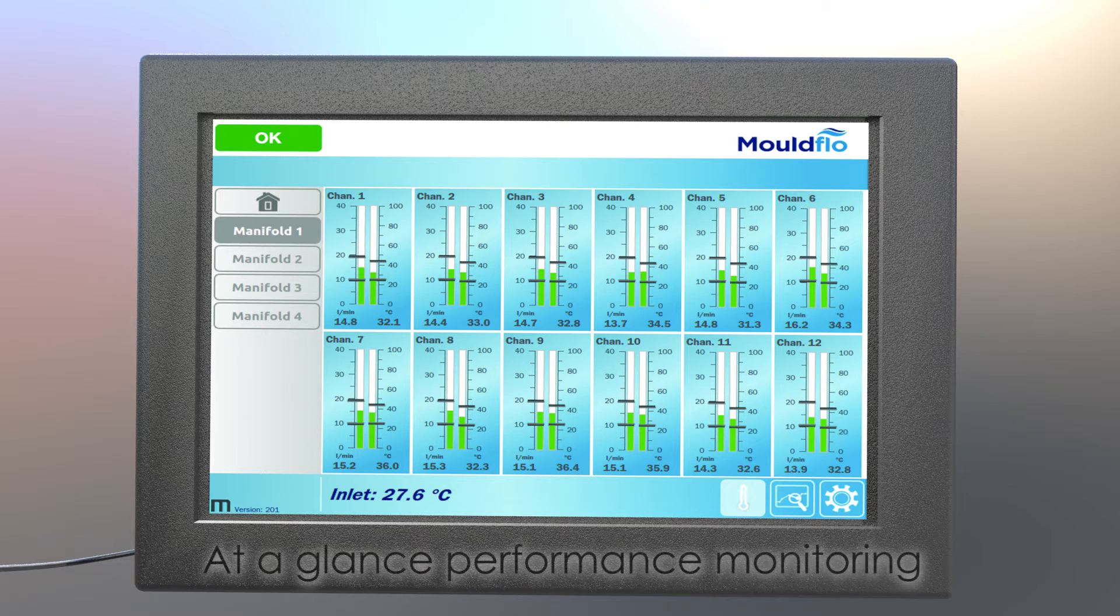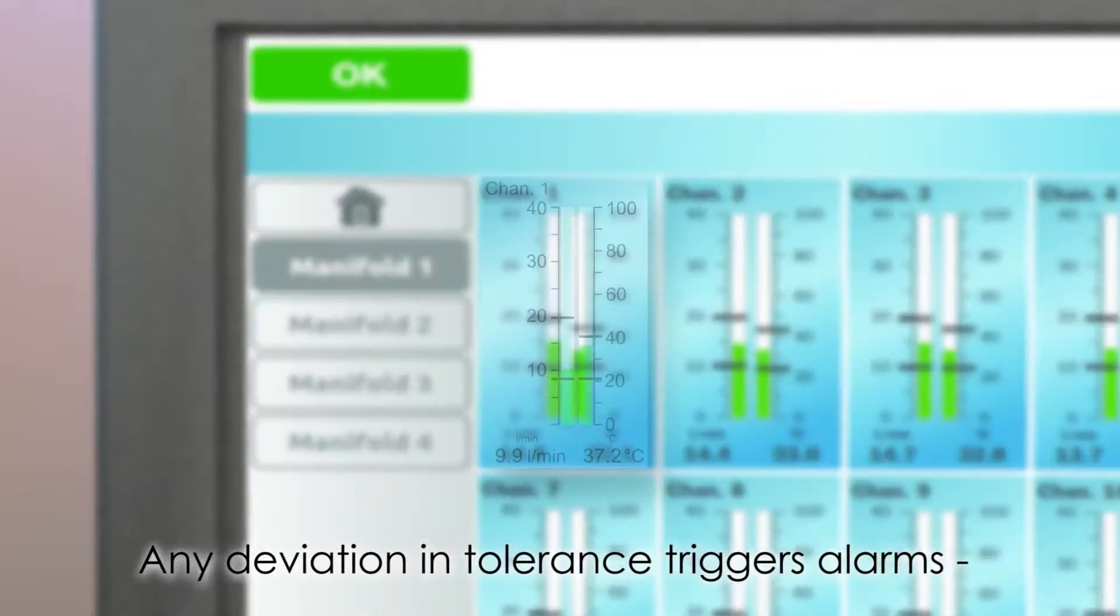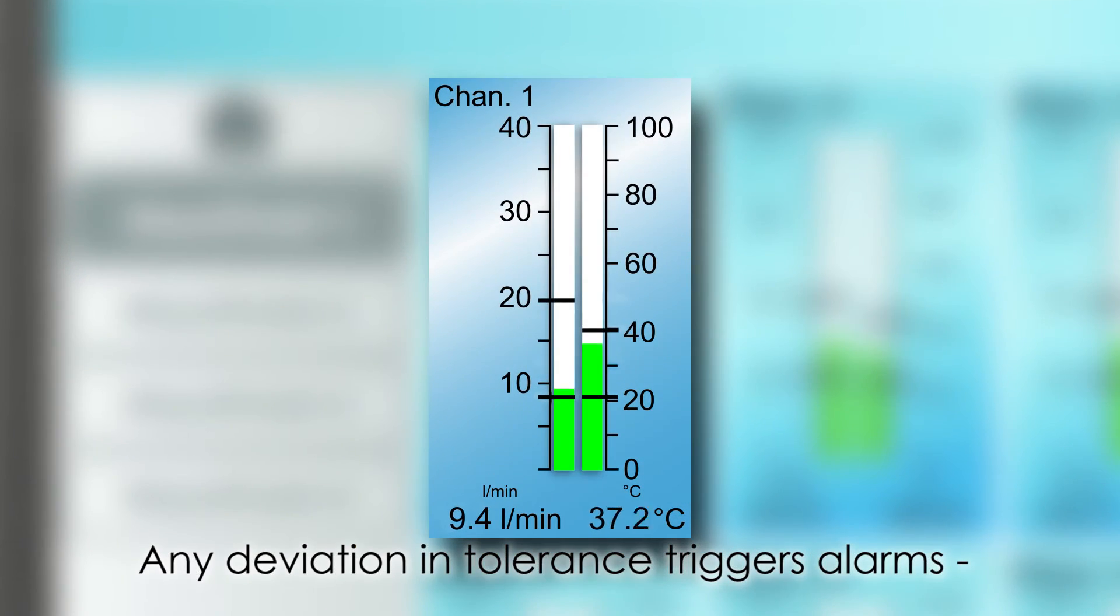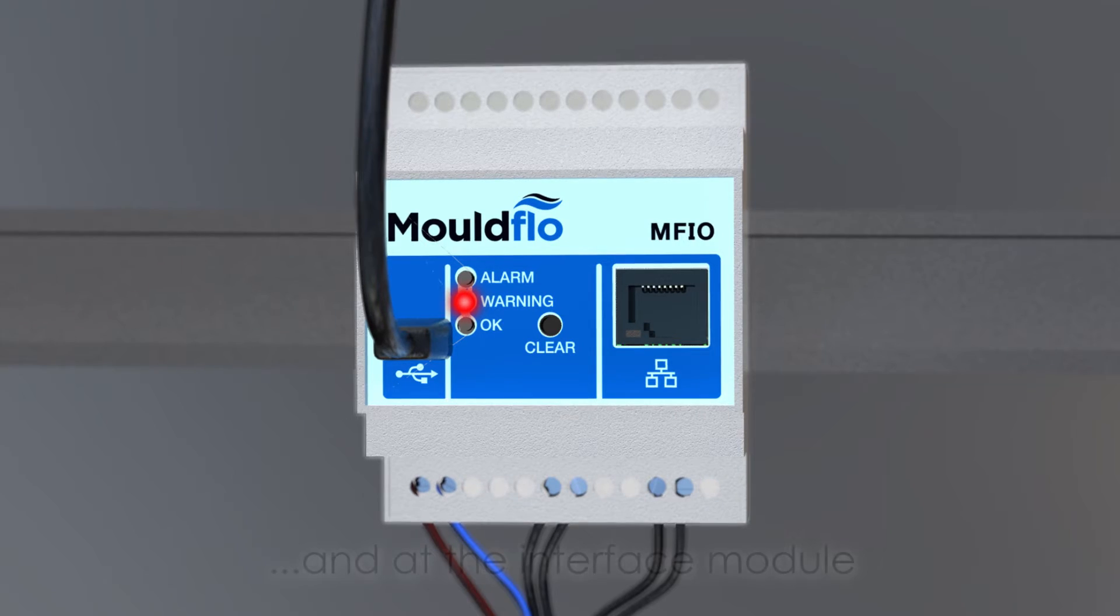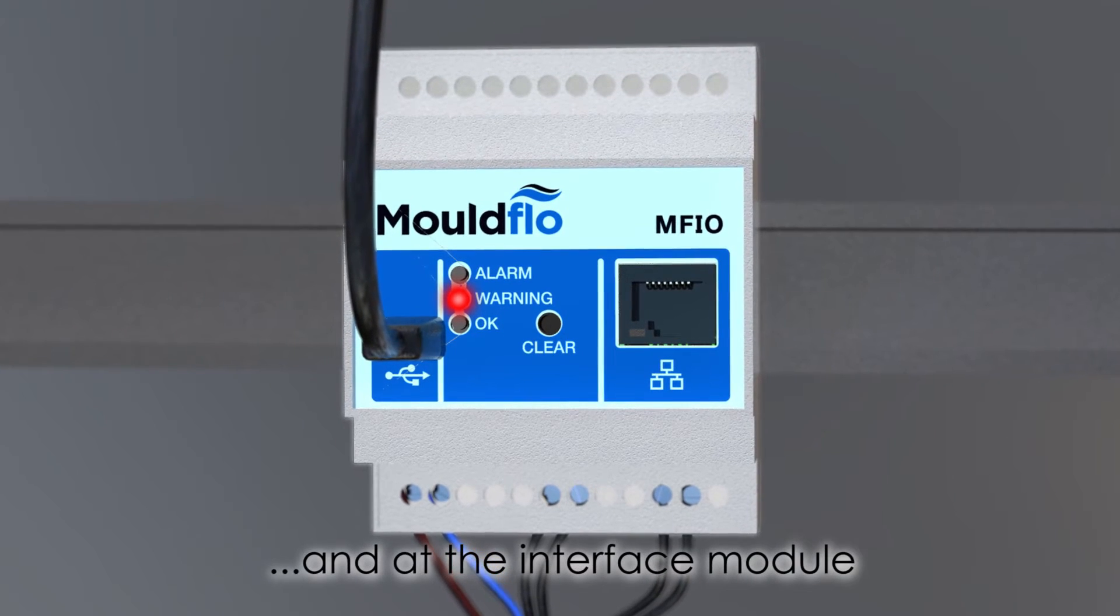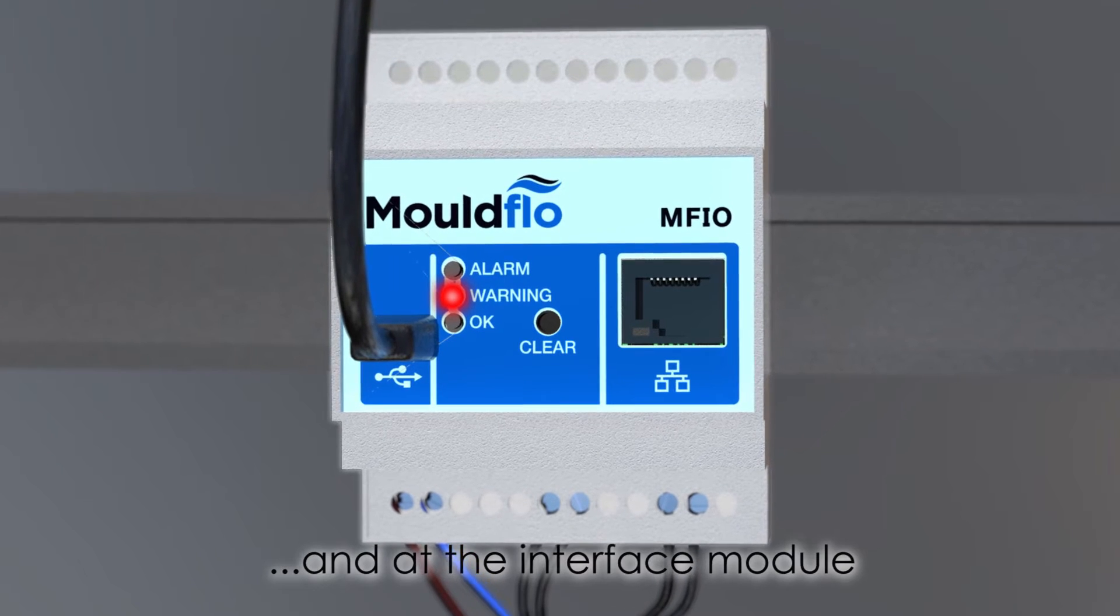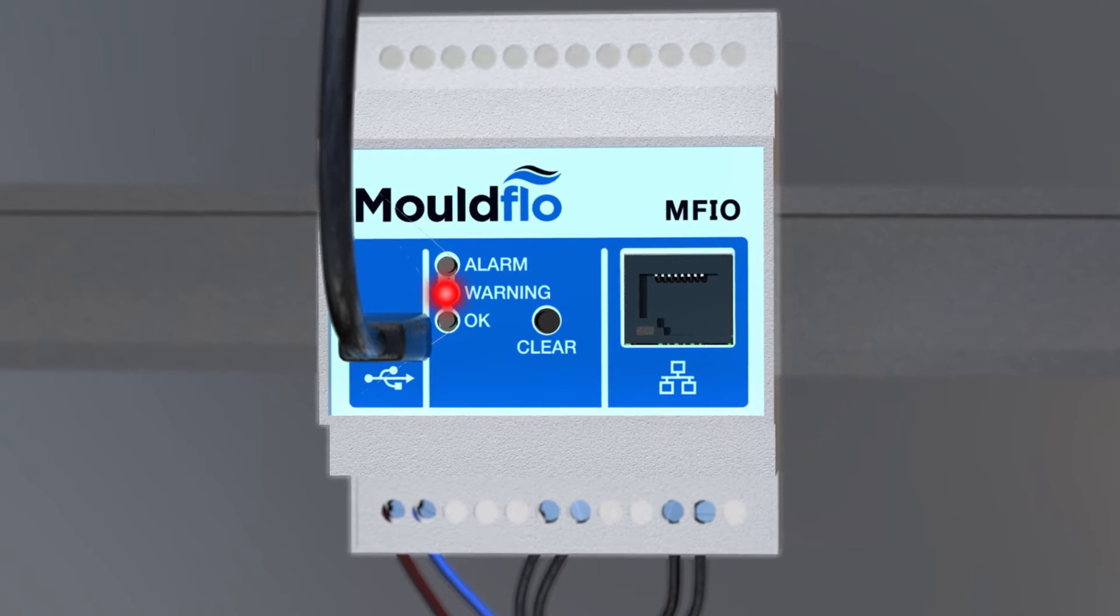Alarm limits can be set for both flow and temperature, meaning any deviation in tolerance can be easily identified. Alarms are displayed on the touchscreen and on the interface module, where an alarm output can be interfaced to the injection molding machine.